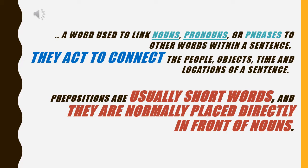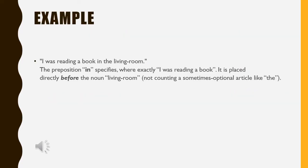Let's take a look at an example of a preposition. Here's an example I wish to share: 'I was reading a book in the living room.' The preposition 'in' specifies exactly where I was reading. It is placed directly before the noun 'living room,' not counting an optional article like 'the.'